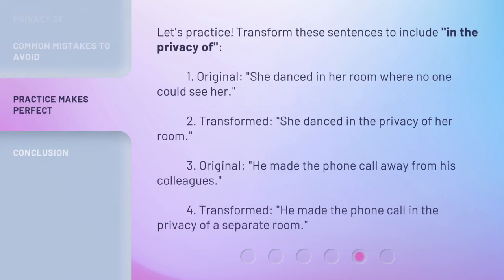Let's practice. Transform these sentences to include 'in the privacy of.' One, original: 'She danced in her room where no one could see her.' Transformed: 'She danced in the privacy of her room.' Two, original: 'He made the phone call away from his colleagues.' Transformed: 'He made the phone call in the privacy of a separate room.'